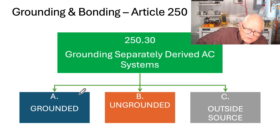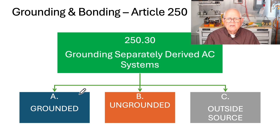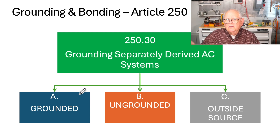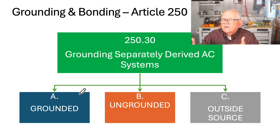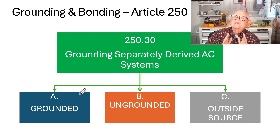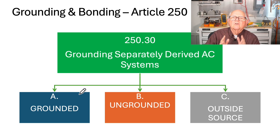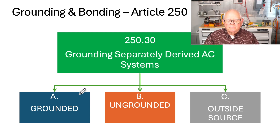Now let's look at the rules for grounding and bonding. For equipment installation, you simply follow the rules for the equipment — Chapters 1 through 4 and whatever else applies. But the real question is: if I'm not switching this neutral, if I no longer have a neutral, I have to derive a new neutral. When you have a separately derived system, the grounding and bonding rules start over again — they're not the same as for the service. You go to Article 250, Section 30: 250.30 is on grounding separately derived alternating current systems.